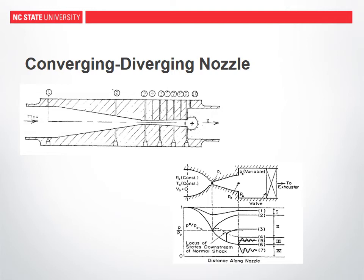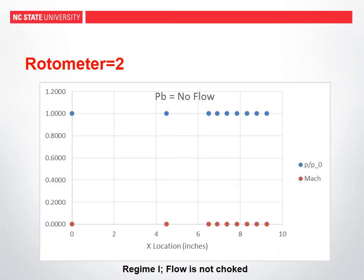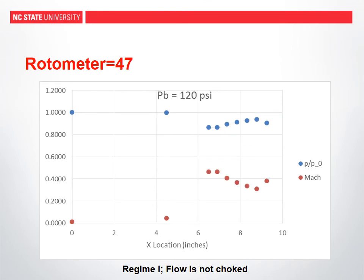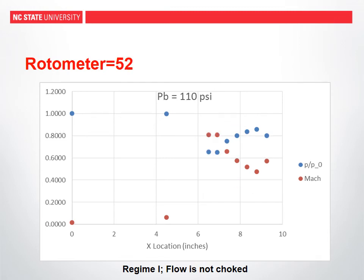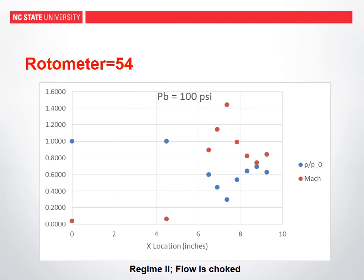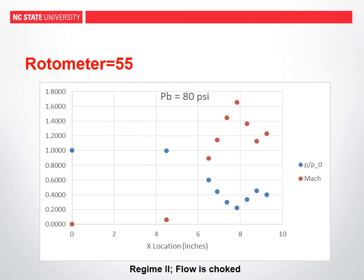Using the formulas shown previously, the Mach and pressure ratio were co-plotted to show their variation along the nozzle. The first plot represents the no-flow condition where back pressure equals total pressure. The next is an example of subsonic flow where the flow never reaches a choked condition. This is followed by an example of choked flow, where there is a normal shock in the divergent part of the nozzle and then the flow becomes subsonic. The flow continues to remain in regime 2 until the end of the experiment.